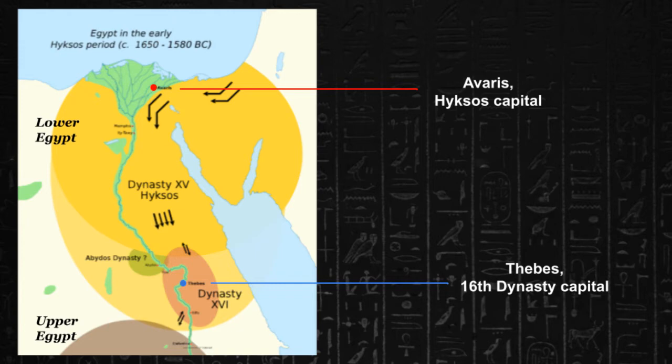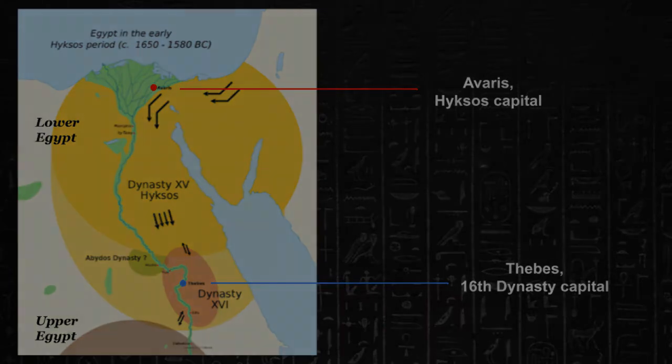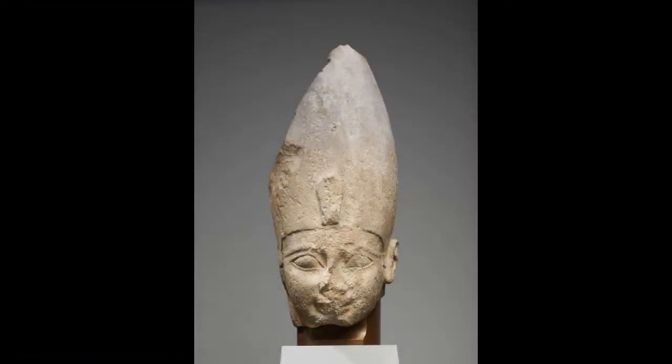These two groups were constantly butting heads as the Hyksos armies expanded their territories south, first threatening and then eventually conquering Thebes. The Hyksos dynasty would come to an end with the reign of Ahmose I, a pharaoh who rebelled and took control of Avaris, pushing the Hyksos kings back into the Levant.